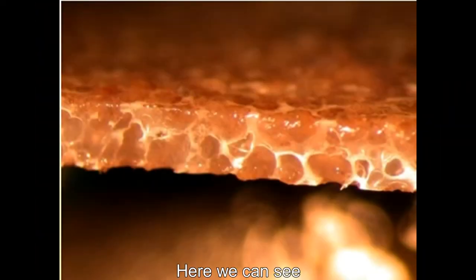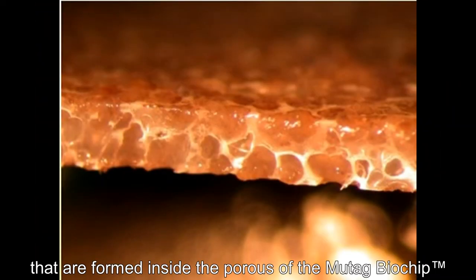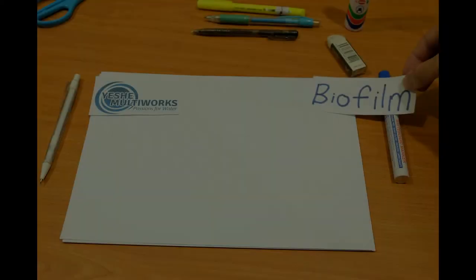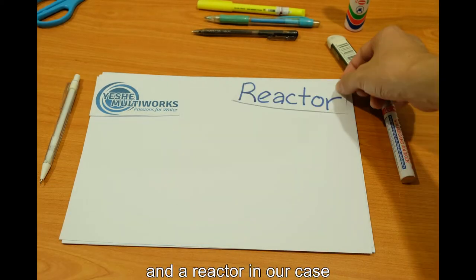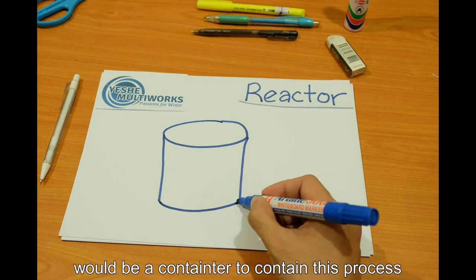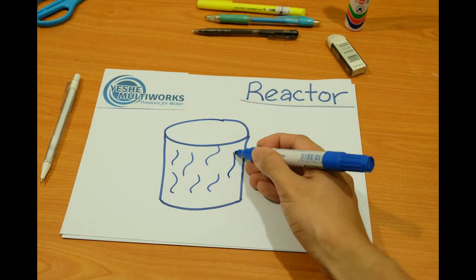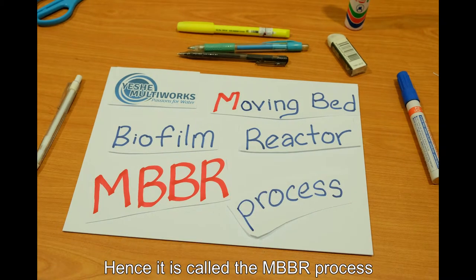Here, we can see the well-protected biofilm that are formed inside the pores of the Mutag biochip. And the reactor in our case would be a container to contain this process, hence, it is called the MBBR process.